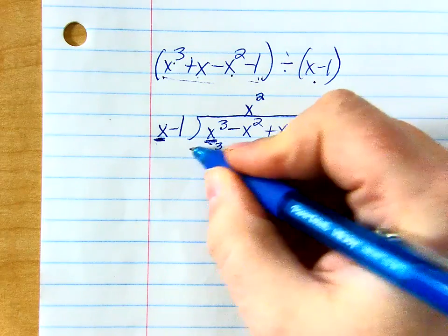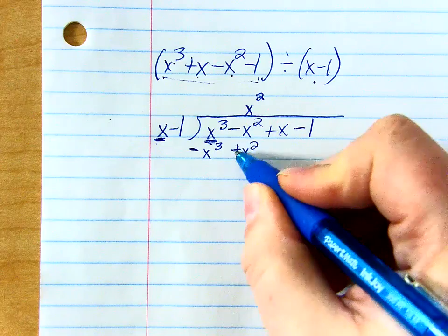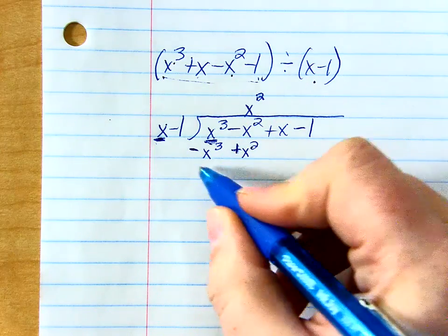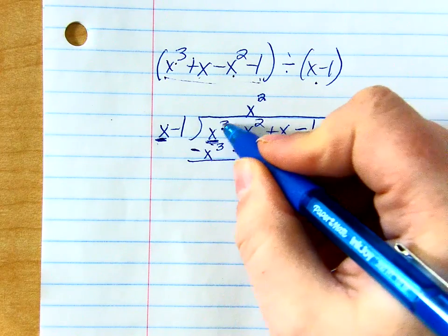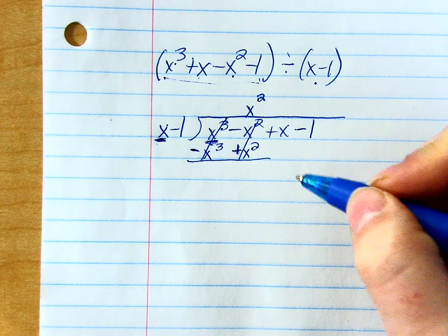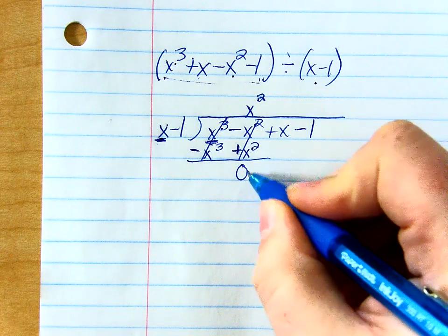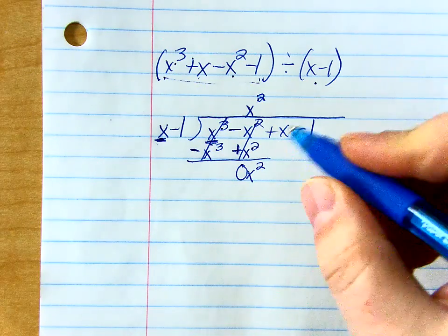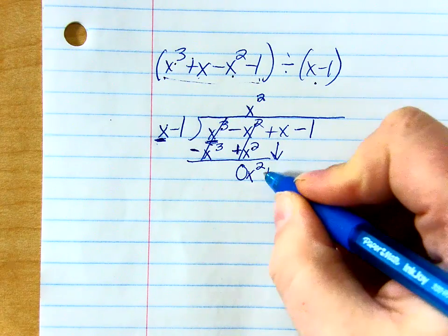But then I subtract them both. So now he's a minus, and now he is plus. Ooh, they both cancel this time. So that one's gone, and this one's gone. I'm still going to write this down here just to keep things organized. And now I'm going to bring down the plus x.